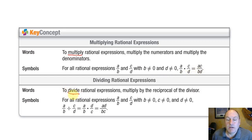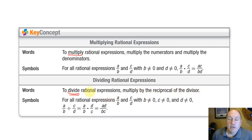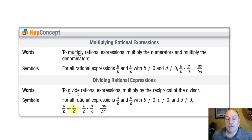For dividing rational expressions, you multiply by the reciprocal of the divisor — invert and multiply. So a/b divided by c/d equals a/b times d/c, which becomes ad over bc.